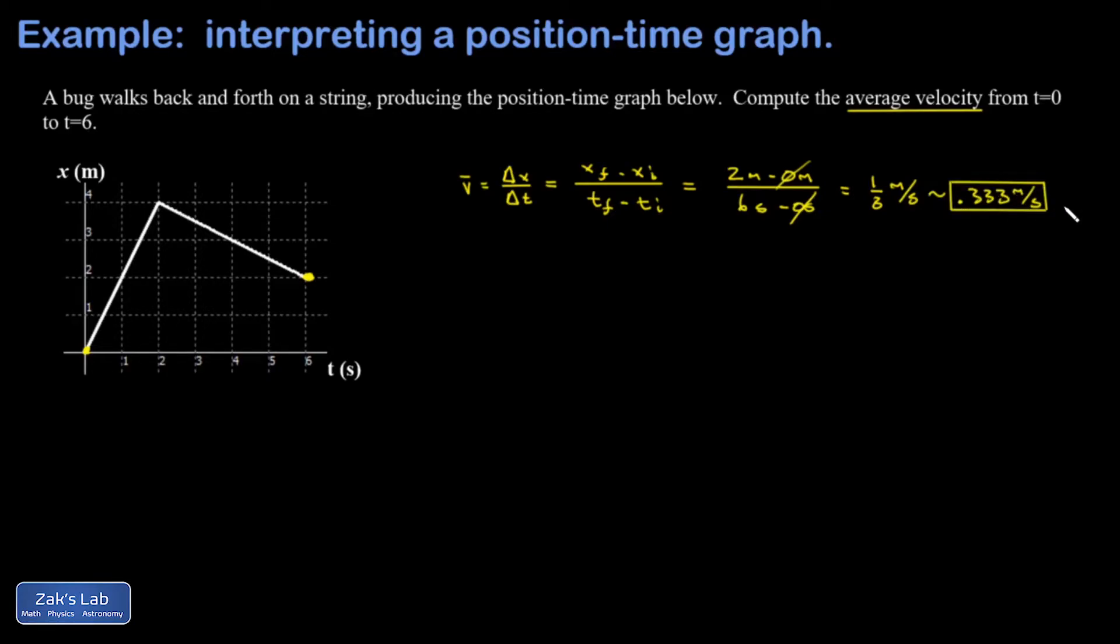Now, it's interesting to note a couple ways that you could get this question wrong. One way that I've seen this go wrong is to compute the speed on the first segment of the journey. So that's where the bug moves 4 meters in 2 seconds, I'll call that V1. 4 meters in 2 seconds, so the bug was moving 2 meters per second for the first 2 seconds.